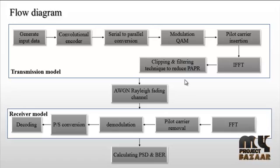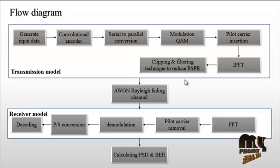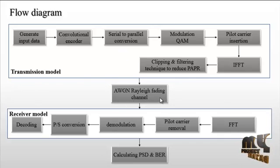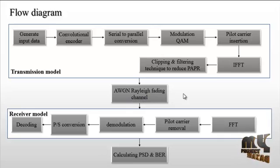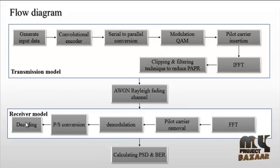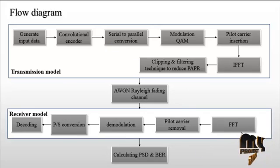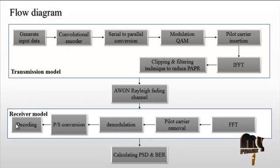After pilot carrier insertion, the Inverse Fast Fourier Transform is applied, and then the signal goes to the clipping and filtering technique to reduce the PAPR. The transmission model then passes through an AWGN Rayleigh fading channel — that is Additive White Gaussian Noise channel. The receiver model is the inverse of the transmission model, using FFT, pilot carrier removal, demodulation, and parallel to serial conversion.